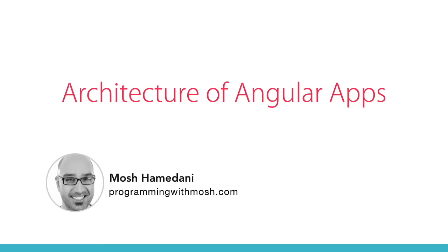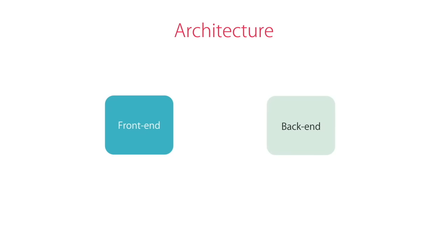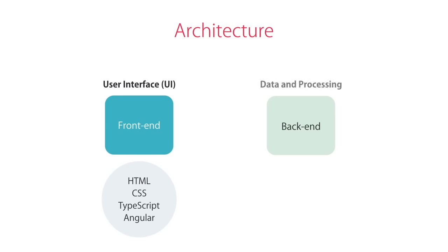Now that you know what Angular is, let's look at the architecture of Angular applications. A lot of modern applications have at least two parts: a front-end and a back-end. The front-end, also called the client, is the part that runs in the web browser — this is what the user sees and interacts with, including the user interface. We use HTML, CSS, TypeScript, and Angular to build the front-end. The back-end sits on a web server or multiple web servers in the cloud and is responsible for storing the data and doing any kind of processing. The front-end talks to the back-end to get or save data.